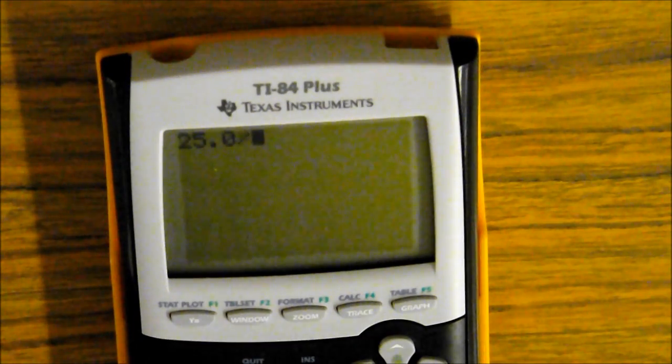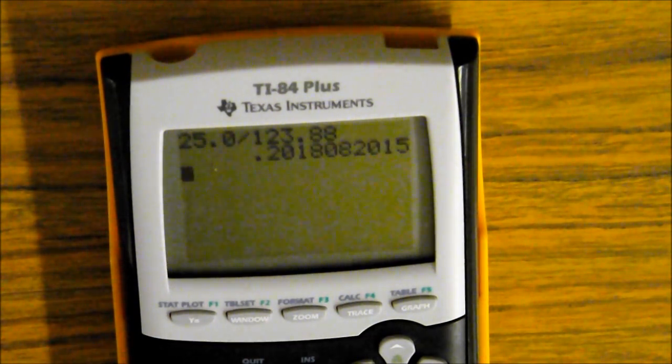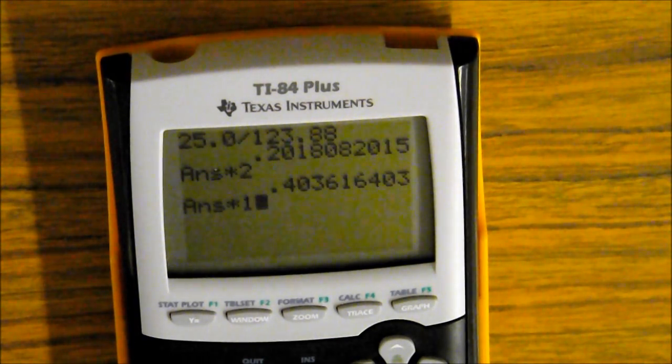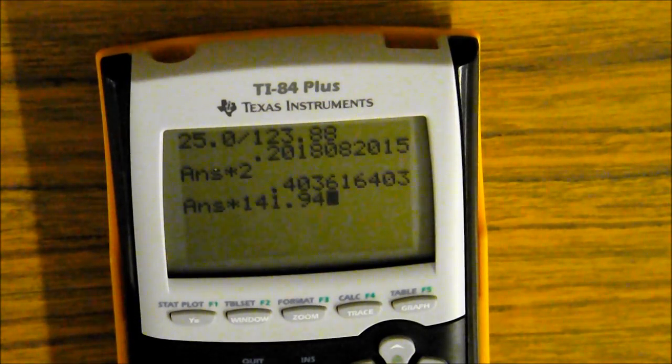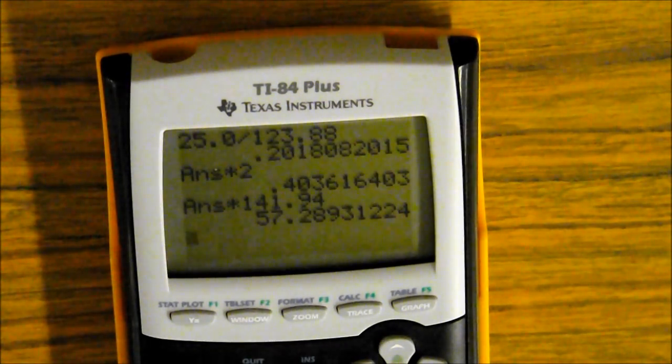Now we're going to calculate that: 25 divided by 123.88. We're going to multiply that by 2 because of the mole-mole bridge. We're going to multiply it by the mass, 141.94.